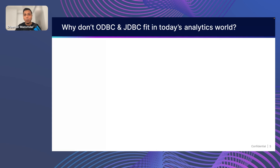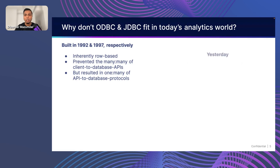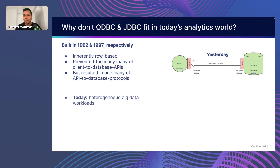Why don't ODBC and JDBC fit in today's analytical world? These were built in the older times — ODBC was built in 1992 and JDBC in 1997 — and they're inherently row-based because they are a product of their environment. Back then, most systems were row-based. They prevented the many-to-many client-to-database API mapping, but also solved only half the problem. It resulted in one-to-many database protocols, so for every data store, each one has its own JDBC and ODBC driver.